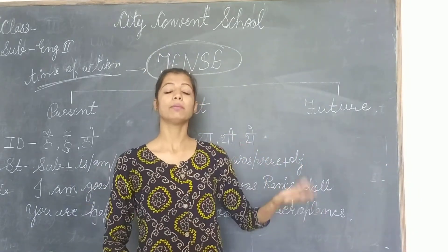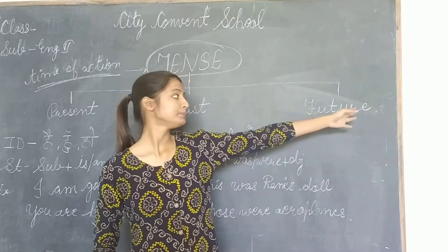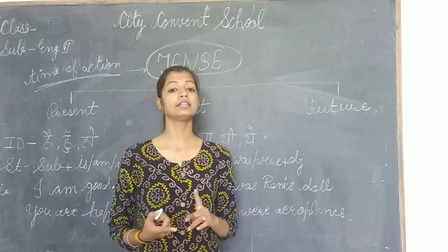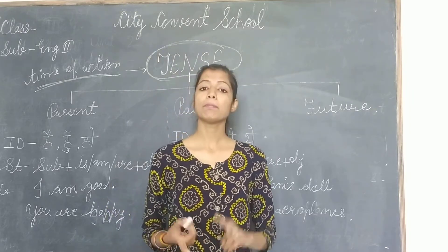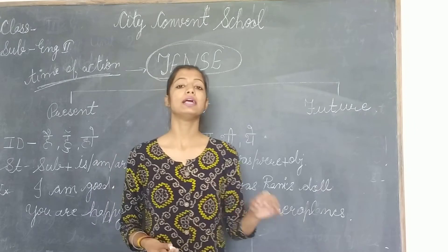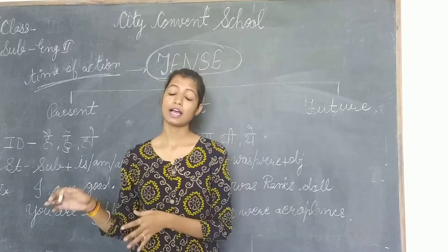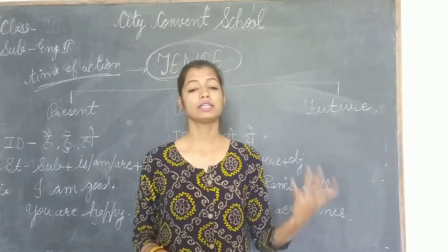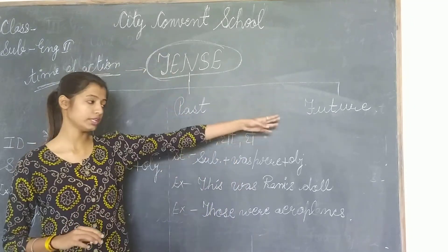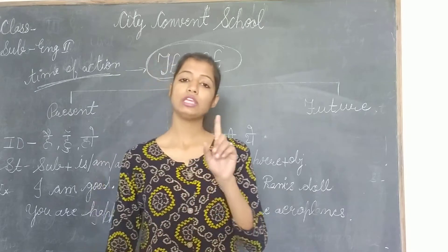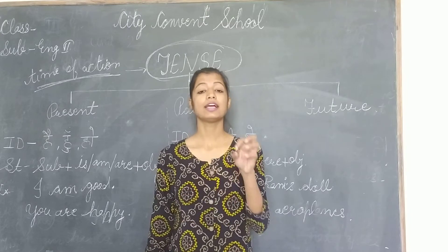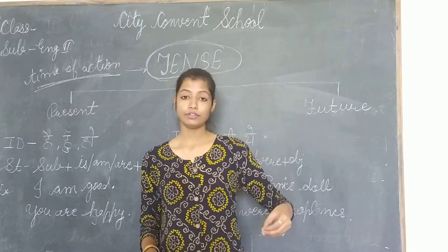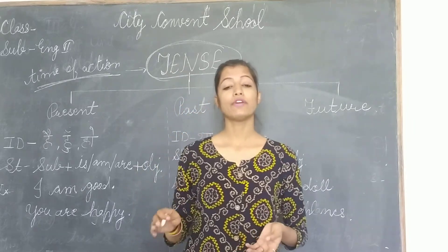Joh aane wale time mein, in the upcoming future mein hone wala kaam hai, unko hum likhenge future tense ke andar. Present tense ke andar likhenge joh abhi current time mein kya kaam ho raha hai. Usse hum bolte hain present tense. Past tense — the work which is already happened — koi kaam pehle hi ho chuka tha. Future tense — the work which is happened in the upcoming time. The time of action is called tense.